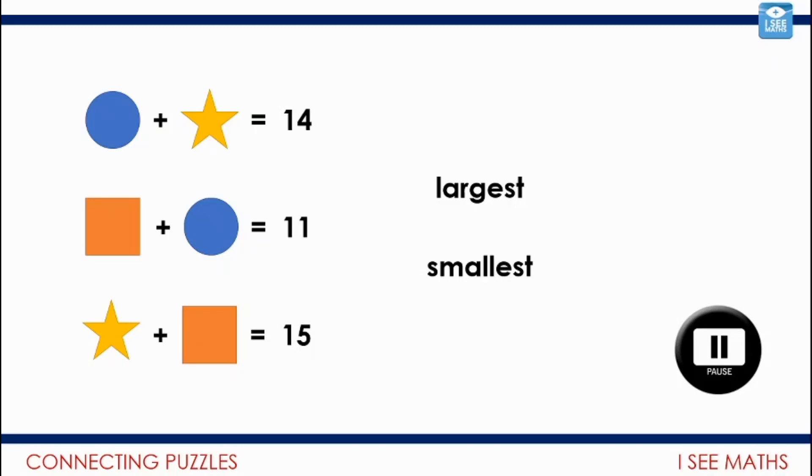Okay, let's have a look. And we've got this key idea that we need to look at two sentences together. So I actually start when I'm looking for the largest and thinking, well, the two number sentences with the largest amounts are the 15 and the 14, and the star's in both of those, the star will be the largest. The two number sentences with the smallest amounts are the circles. So I think that the circle will be the smallest value of those three values.